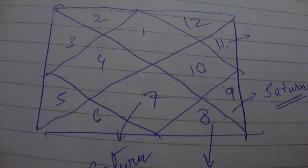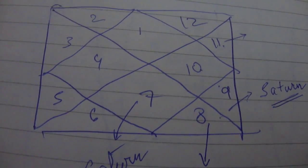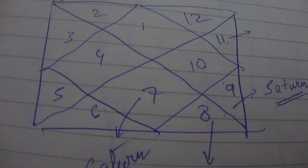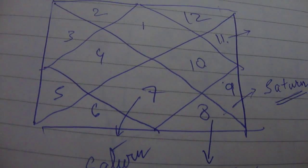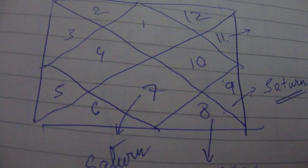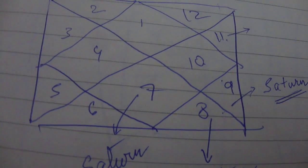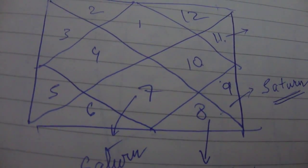Unless it's in its own sign—if Saturn is in its own sign, that is Capricorn and Aquarius, in that case the marriage would be early. But in general, if Saturn is in the seventh house and not in a very friendly sign, then there can be a bit of delay in the marriage.